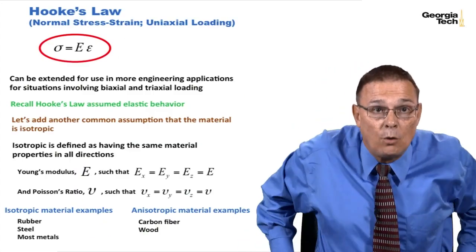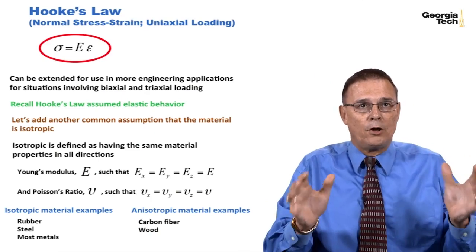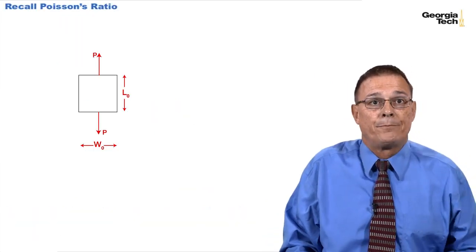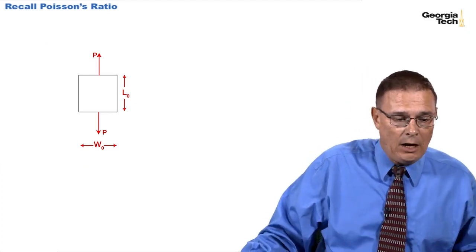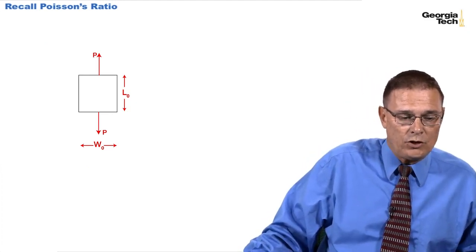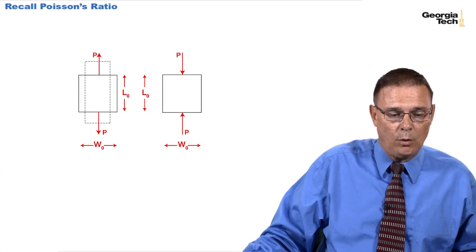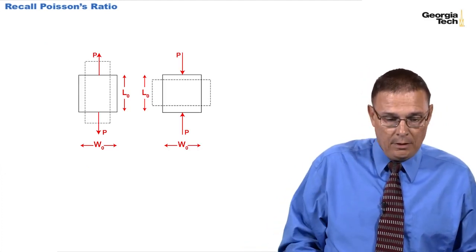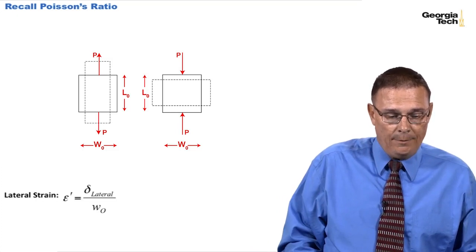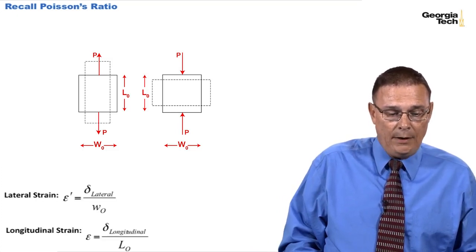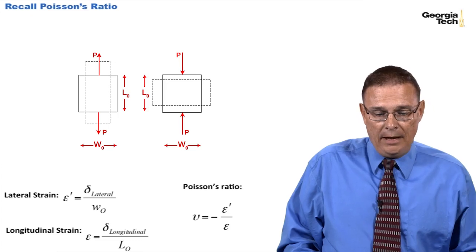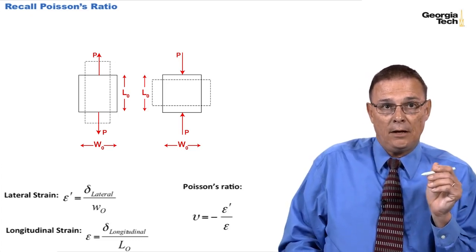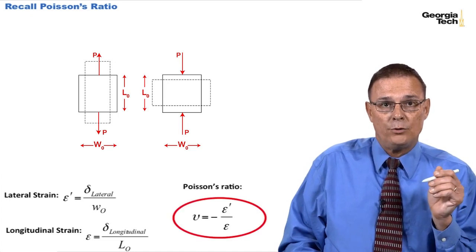That's the difference. What we're developing for Hooke's Law is generalized for isotropic materials. Recall Poisson's ratio, which we talked about earlier in the course. We defined Poisson's ratio with the lateral strain and the longitudinal strain. Poisson's ratio equals negative the lateral strain divided by the longitudinal strain.